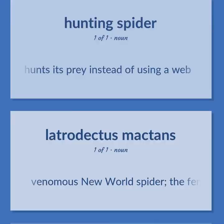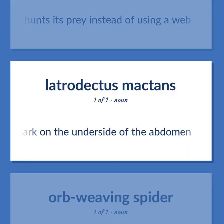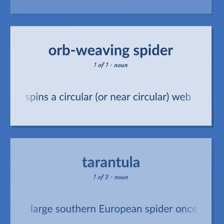Ground spider that hunts its prey instead of using a web. Venomous New World spider — the female is black with an hourglass-shaped red mark on the underside of the abdomen. A spider that spins a circular, or near-circular, web.